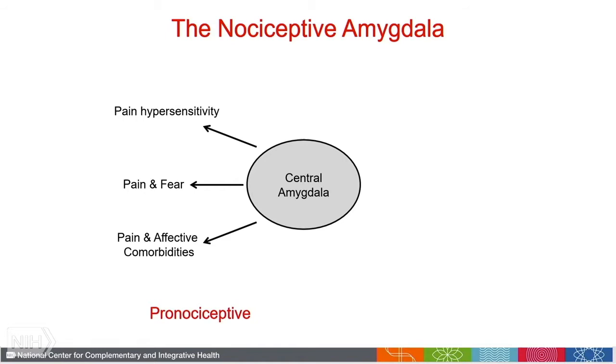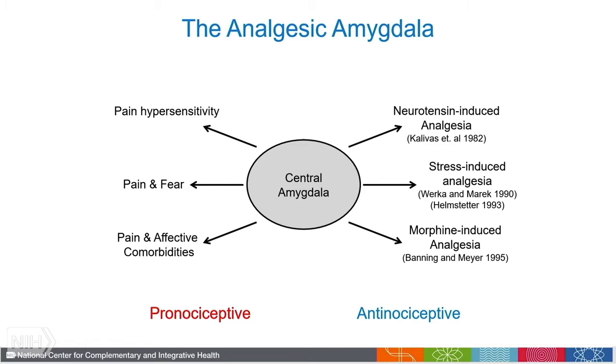Now, when we looked at the historic view of the central amygdala — looking at the early studies in the 80s and 90s — it pointed to the central amygdala as a site that modulates analgesia.